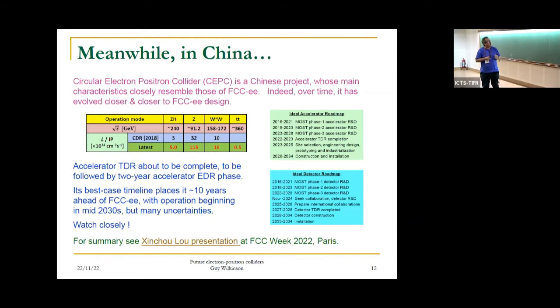Before telling you more, we should concede there's another circular machine under consideration, the CEPC in China. The main characteristics closely resemble those of FCC-ee. Looking at the CDR, it was probably less ambitious in design, but in the years since it's evolved to something quite close to the FCC-ee design. If you believe everything you're told, this could actually come into operation 10 years before FCC-ee, meaning the mid 2030s. But there are many uncertainties, and I would regard this as very ambitious and aggressive, but certainly we should watch closely.